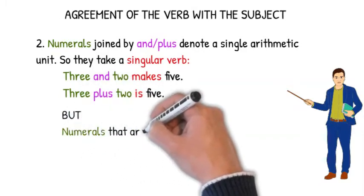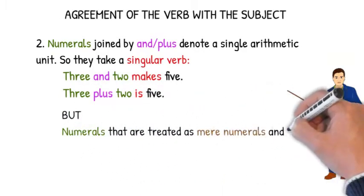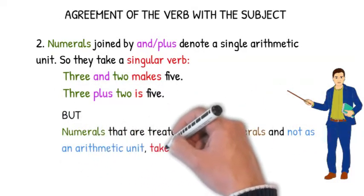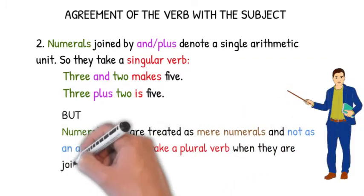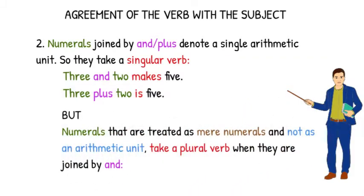But numerals that are treated as mere numerals, and not as an arithmetic unit, take a plural verb when they are joined by and. Four and seven are my lucky numbers.